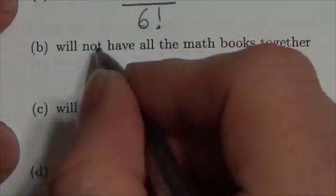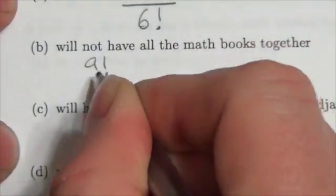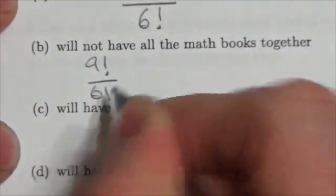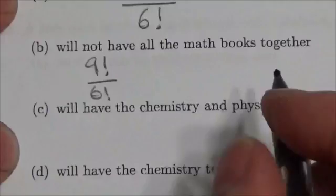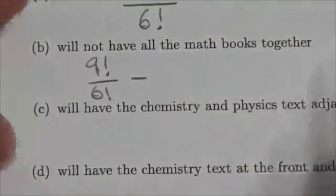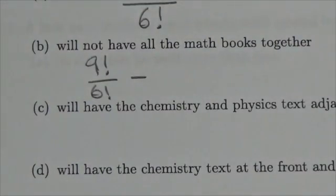It's easier to take all of the ways they can be organized without restriction, which is what we did in the first question. And then we're going to subtract from it all the different ways those books could be together.